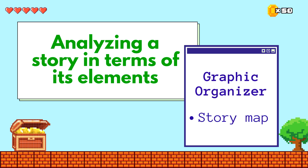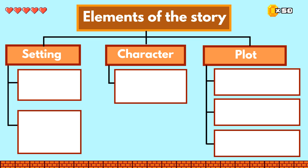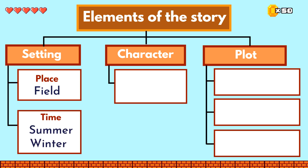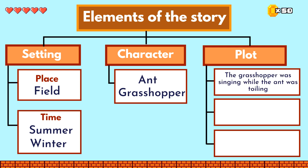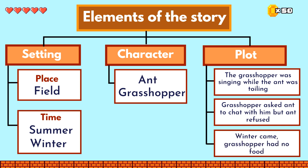One of the simplest graphic organizers would be this. To analyze the story that we studied earlier using this story map, we just have to put the setting here, the character or characters here, and the plot here. The first box under the plot would be for the beginning, the second box would be for the middle, and the last box would be for the ending.